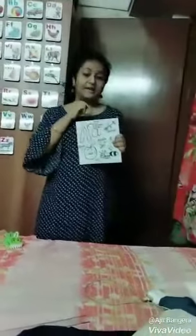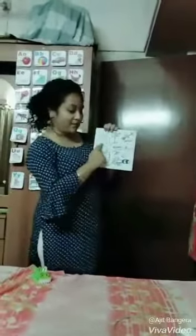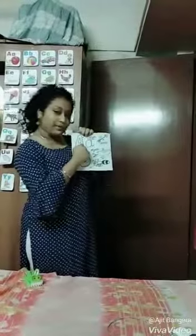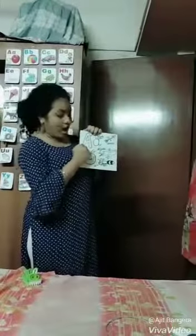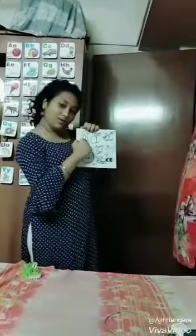How do we trace A? Up the mountain, down the mountain, bridge between the mountain. Up the mountain, down the mountain, bridge between the mountain. This is capital A, this is small a. A is A, the sound is A.